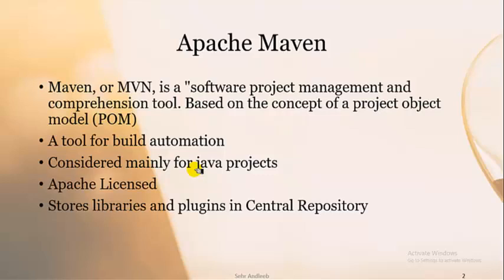First of all, what is Maven? Maven is basically a software project management and comprehension tool. It is also called a build tool. It is totally based on the concept of Project Object Model (POM). POM basically has configuration details about the project and other descriptions. The POM file is an XML file and it is very important for Maven — it is the structural unit of Maven.